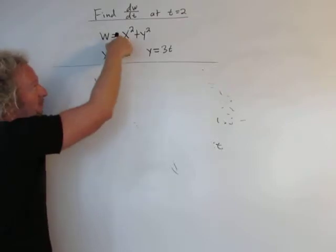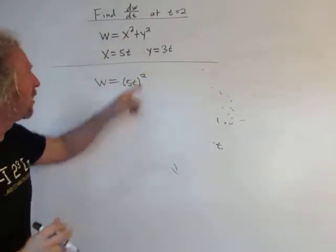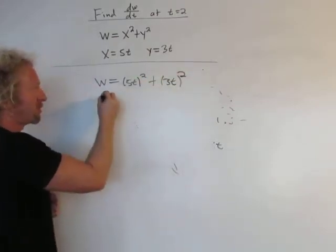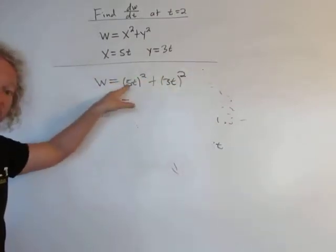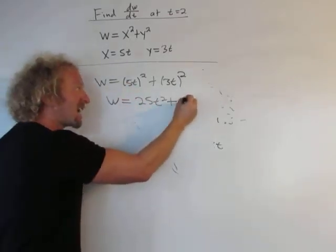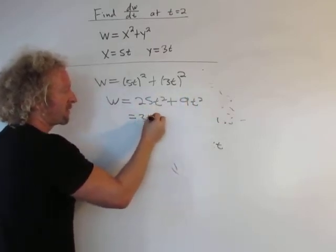x is 5t, so we're going to get 5t quantity squared. y is 3t, so we get 3t quantity squared. So w, square each piece, 25t squared plus 9t squared. So we get 34t squared.